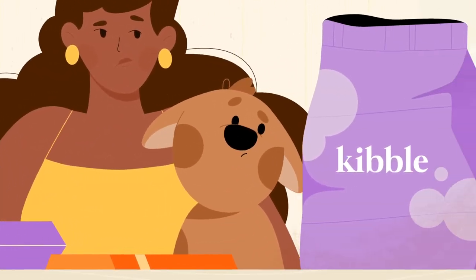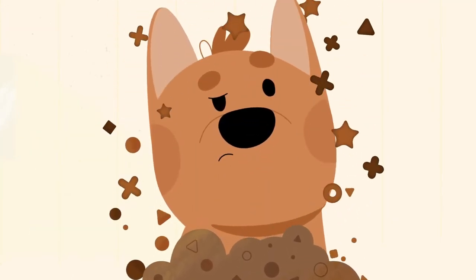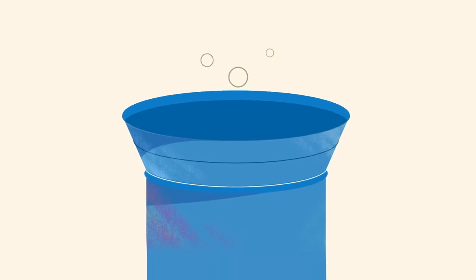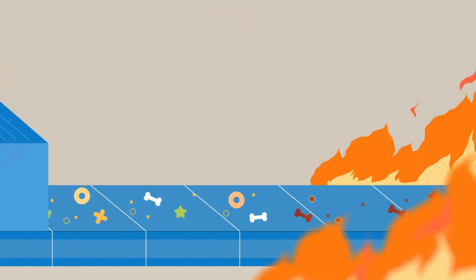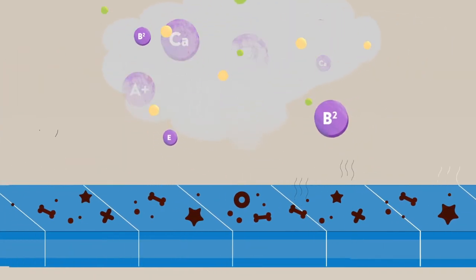Ah, kibble. Those dry, dubious pebbles. Multicolored, geometrically shaped. Kibble may start with fresh ingredients, but during the cooking process, they're crushed, torched, and sprayed until many of the natural benefits of those fresh ingredients are lost.